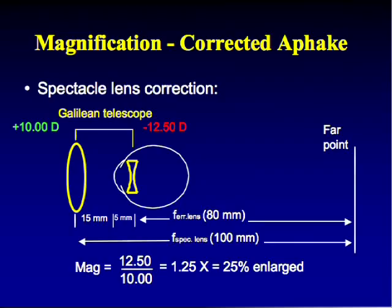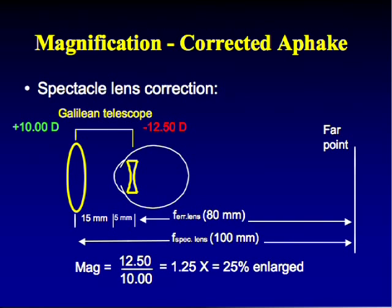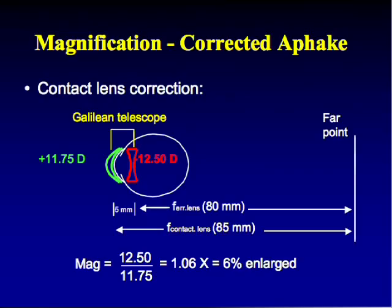The magnification is eyepiece power over objective power: 12.5 over 10 equals 1.25x — a 25% enlargement for a spectacle-corrected aphakic patient. With an intraocular lens of plus 11.75 diopters, magnification drops to 12.5 over 11.75 = 1.06x, or only 6% enlargement. Contact lenses give less magnification than spectacles; IOLs give even less.